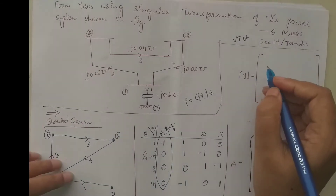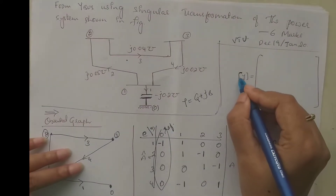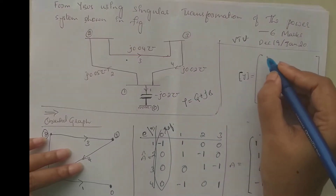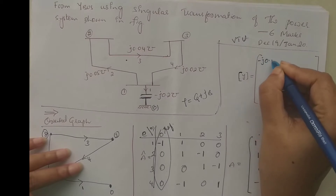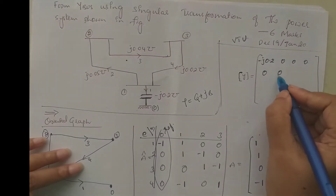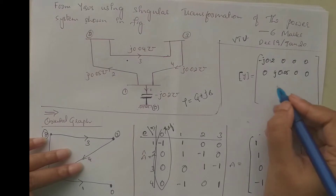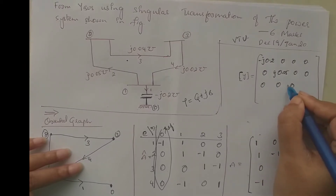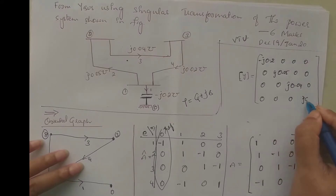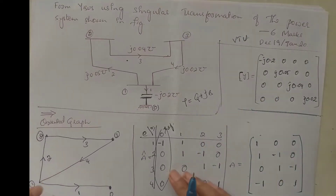Next, matrix Y can be directly obtained. Since there is no mutual coupling, it is a self-admittance matrix — a diagonal matrix. The first element has value -j0.2, so y11 = -j0.2. The second element value is j0.5. The third element value is j0.04. The fourth element value is j0.02. This is the primitive admittance matrix.